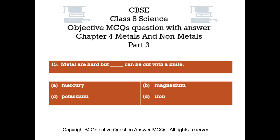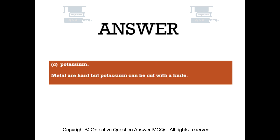Question number 15. Metals are hard but blank can be cut with a knife. Option A: mercury. Option B: magnesium. Option C: potassium. Option D: iron. The right answer is option C. Potassium. Metals are hard but potassium can be cut with a knife.